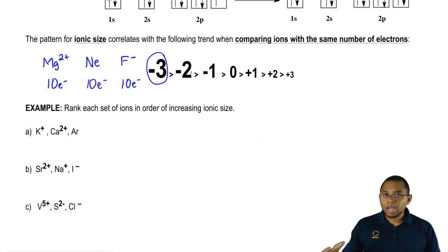Now, obviously, if you have a number that's even more negative than minus 3, then that would be bigger than minus 3. If you have a number that's even more positive than positive 3, then that would even be smaller still.